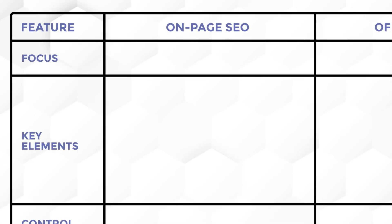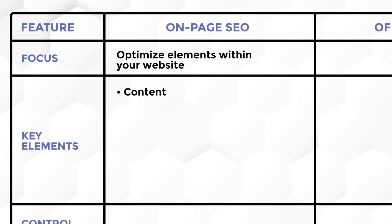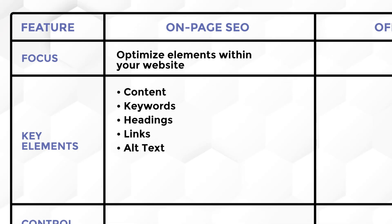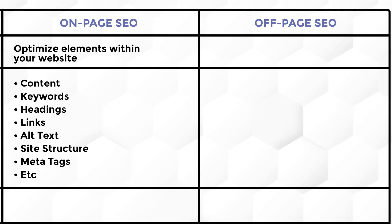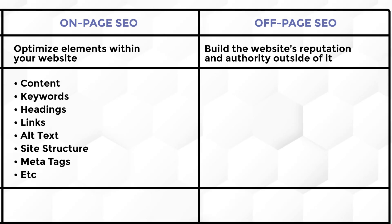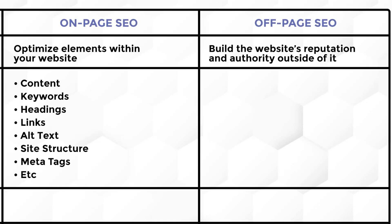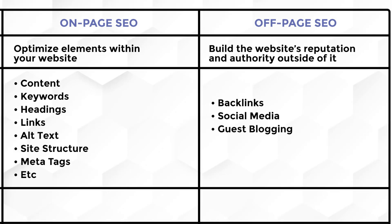The focus for on-page SEO is to optimize elements within your website, such as your content, keywords, headings, links, alt text, site structure, meta tags, and more. While the focus for off-page SEO is to build reputation and authority outside of your website through backlinks, social media, guest blogging, and many others.